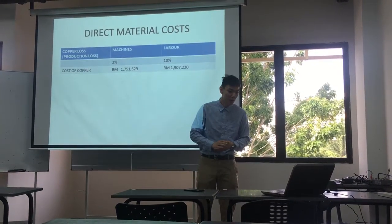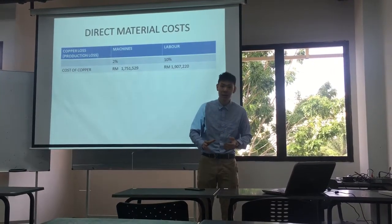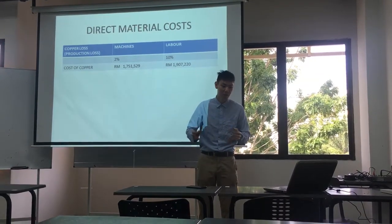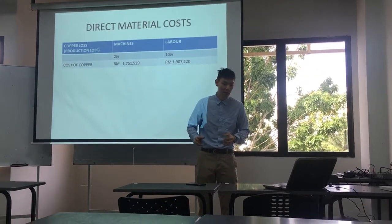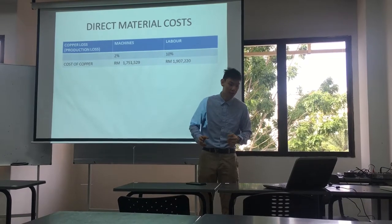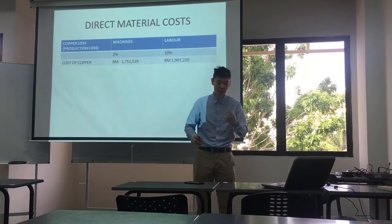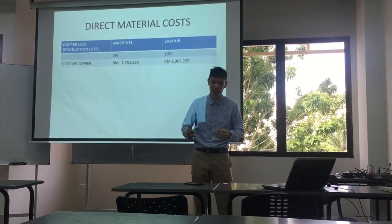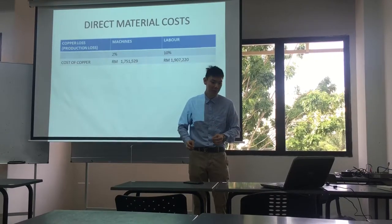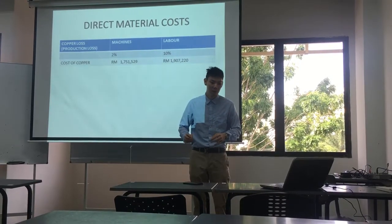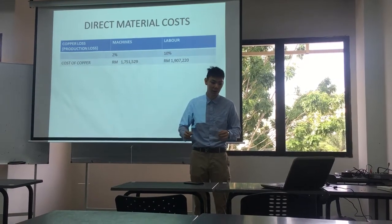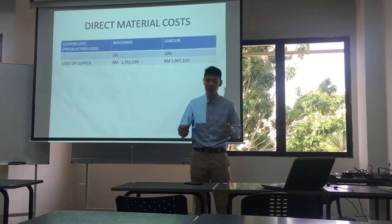For the cost of copper, when machines are used, it is able to reduce the cost of copper as there is only 2% copper loss, compared to 10% copper loss in labour. So this gradually reduces the cost of copper for machines.